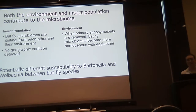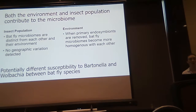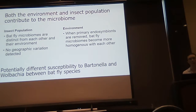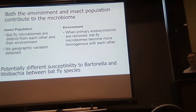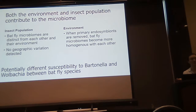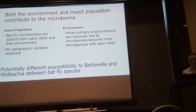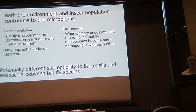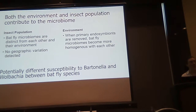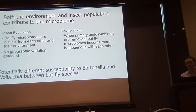One thing that could be dictating this is priority effects — the order in which individuals colonize a community, in this case a microbiome community, can dictate their interaction with secondary colonizers, which in this case would be the pathogens. We're not certain if this could be governed by the different primary endosymbionts of these species, but it's a direction for future work.